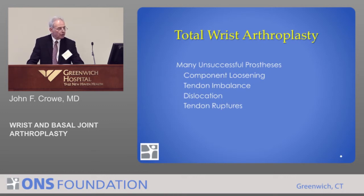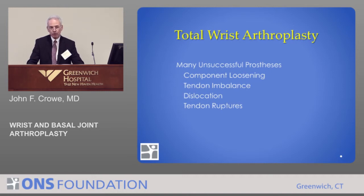The problems with total wrist arthroplasty include component loosening, tendon imbalances, dislocation, tendon ruptures, a low infection rate but a very high revision rate and failure rate — to the point where the gold standard for wrist arthritis has been wrist fusion or partial wrist fusion, which is obviously limiting, just like elbow fusion was. But it still worked better than a failed wrist replacement.